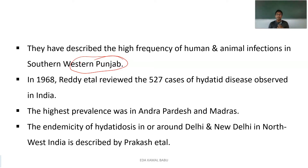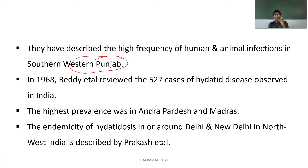In India, these infections are occurring mainly in southwestern Punjab. In the year 1968, Mr. Reddy et al. reviewed about 527 cases of hydatid disease observed in India. The highest prevalence rate — the highest endemic rate — is found in the states of Andhra Pradesh and Madras.